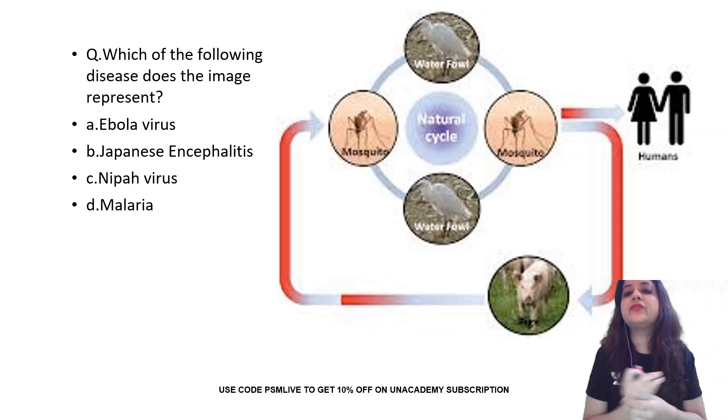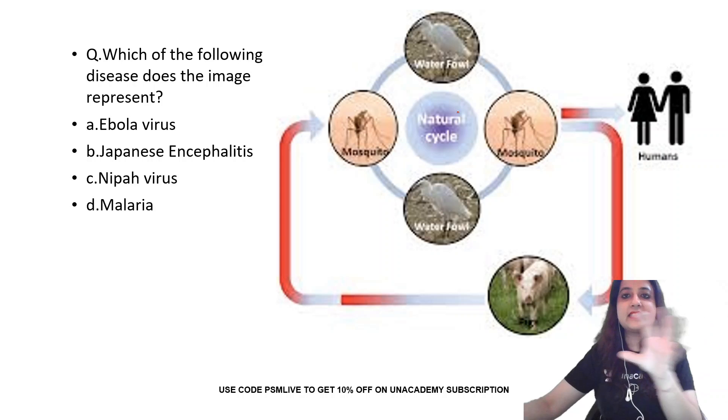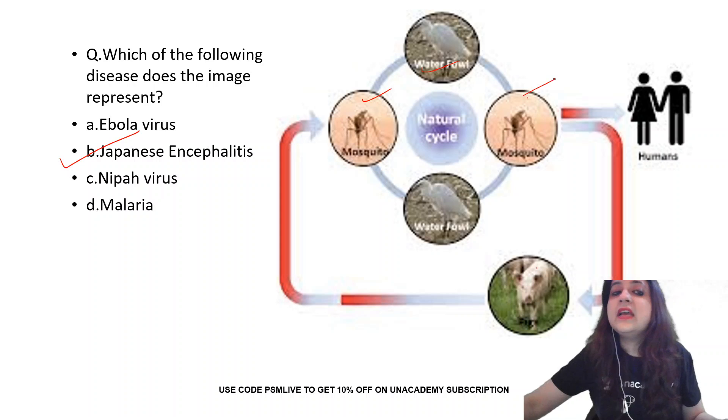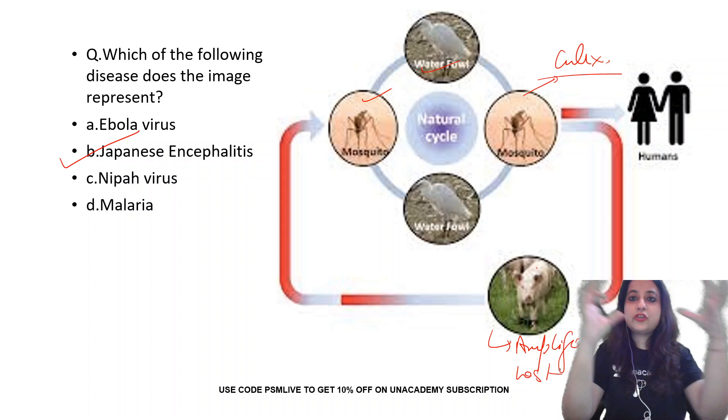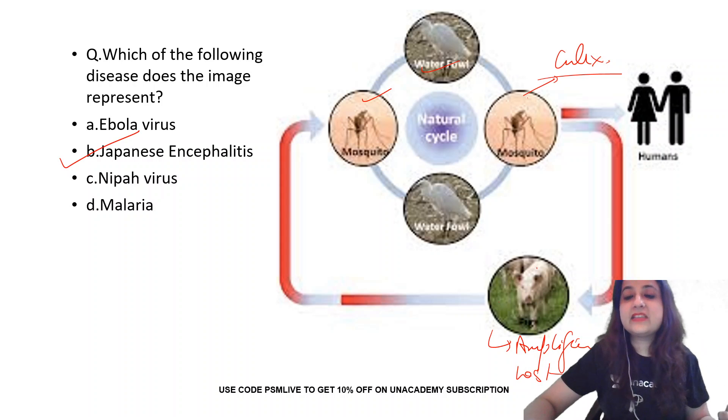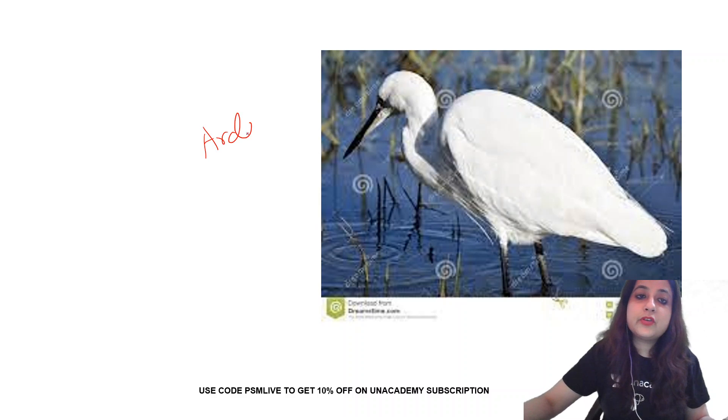Let's go to a very important question for the day. What does this life cycle represent? I'll just give you a basic summation of life cycles. A mosquito, a water bird and a pig. Very correct. This is Japanese encephalitis. Waterfowl or ardeid birds are the natural reservoir. Japanese encephalitis and pigs over here are the amplifier host. So if you see in any image, you see mosquito and you see a bird and you see pigs, it is Japanese encephalitis. This is an ardeid bird. This is the natural host.